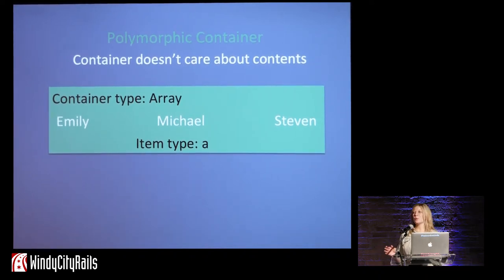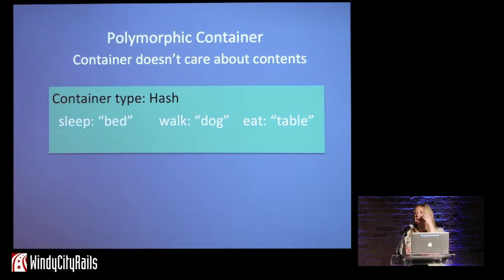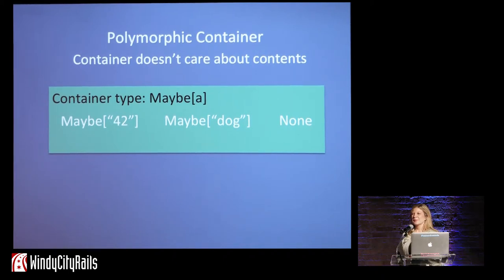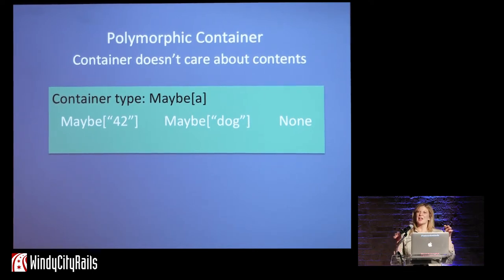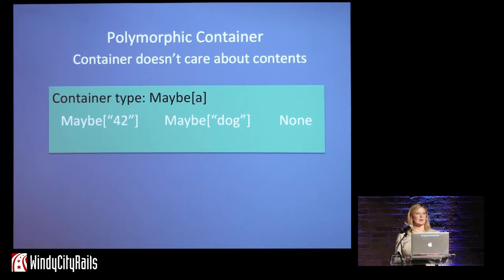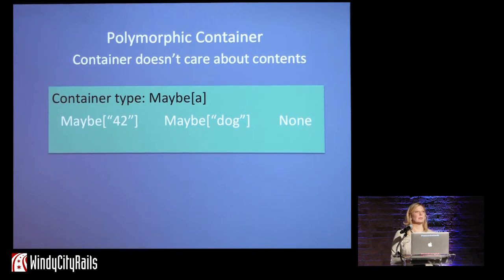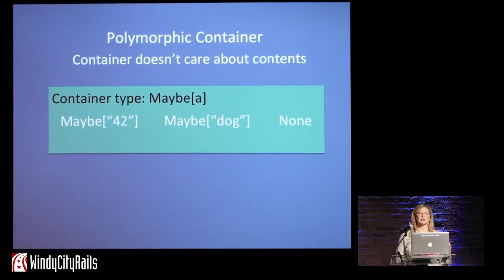What that means is I've got a polymorphic container. Because I don't care what type is inside of it, I'm just going to say it's full of A's — an array of A's. Now, a little bit more interesting: it doesn't have to be an array. It could also be a hash. It could also be a maybe. So my polymorphic container — I don't care about the type of the container and I don't care what the type of the value is. They're not dependent on each other. And I've just introduced maybe, which is a monad. If you've heard of monad before, you've probably heard of maybe, because it helps deal with problems with nil. Maybe has 42, or dog, or none — doesn't matter. Still maybe. Still a polymorphic container.